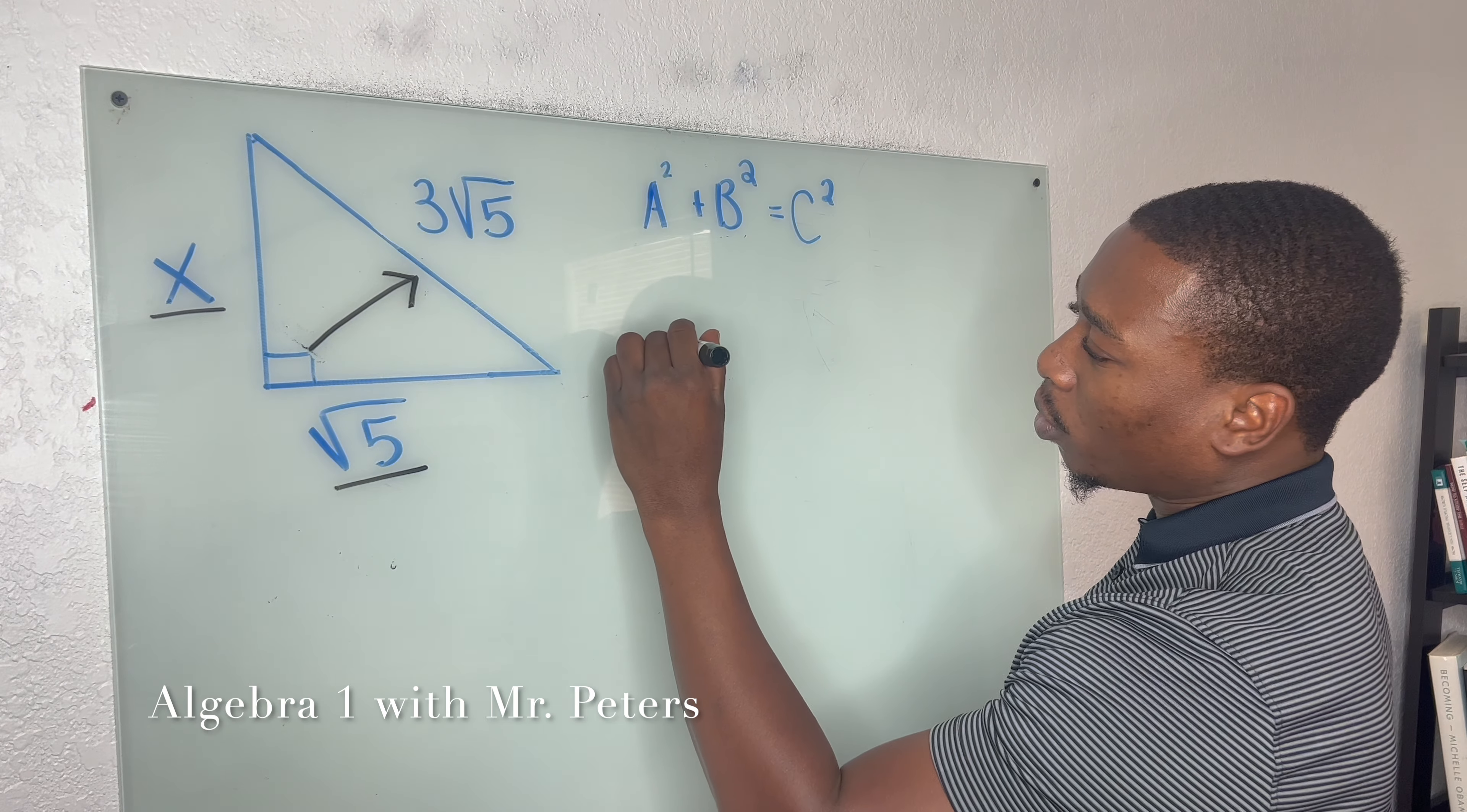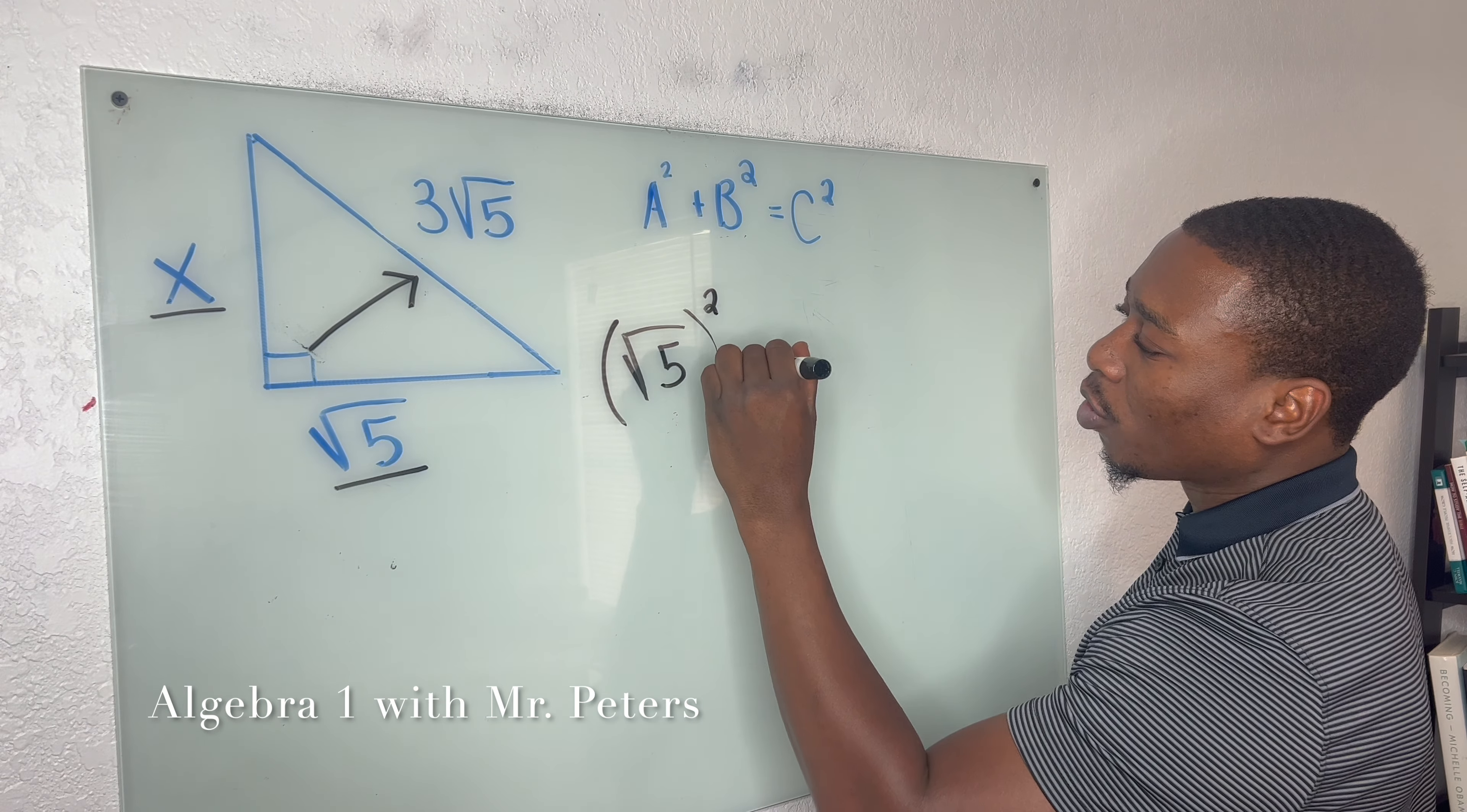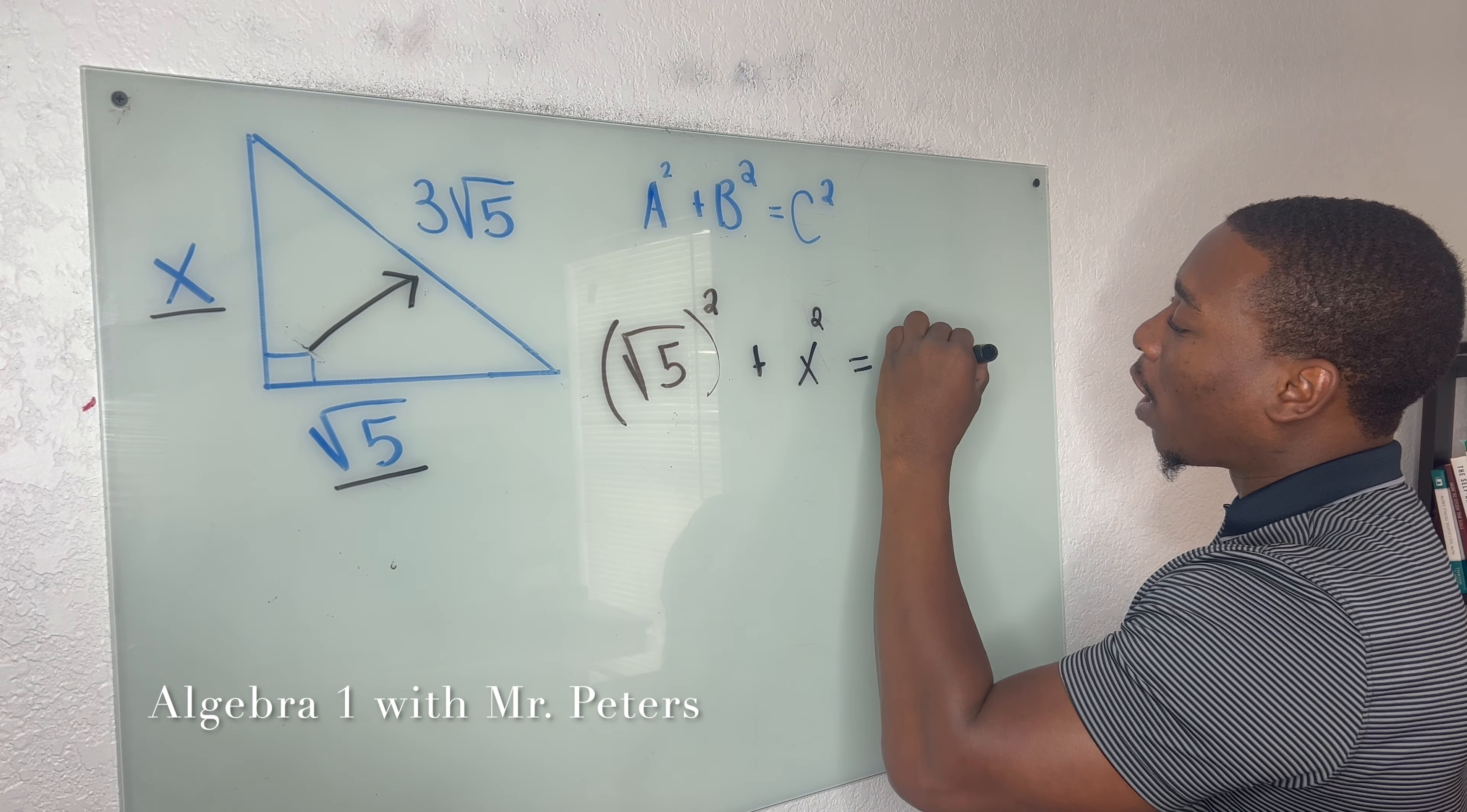In this problem, the radicals is what's going to make this harder to solve. So we have radical 5 squared plus x squared is equal to 3 radical 5 squared.